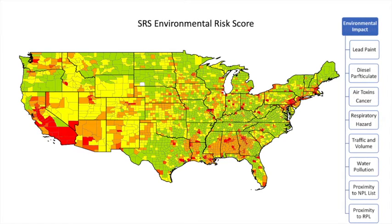While the SRS environmental risk score examines air and water quality, components of pollution, exposure to carcinogens, as well as proximity to toxic sites.